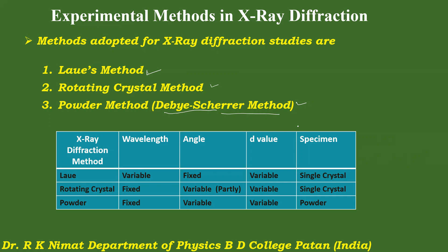We will discuss the Laue method in detail in the next lecture. In the Laue method, λ is variable — we use a continuous beam of X-rays containing a range of wavelengths. Since we use a single crystal, θ is fixed. There are different planes, so D can be considered variable, and the specimen is a single crystal.